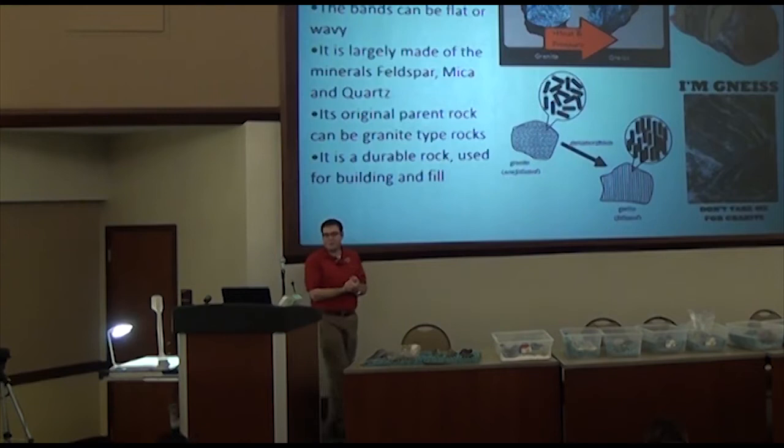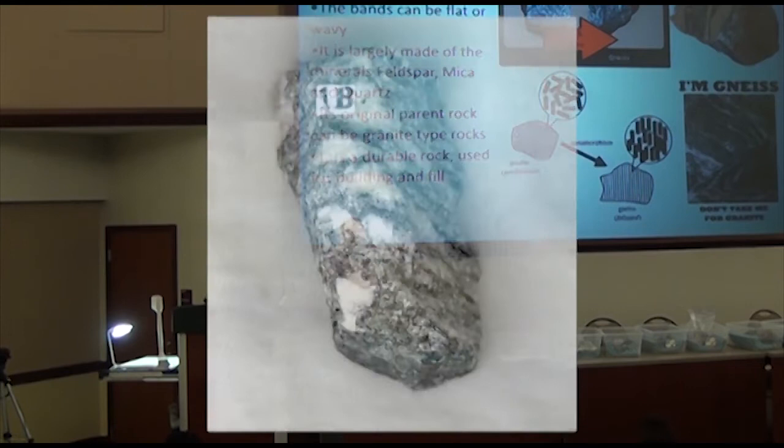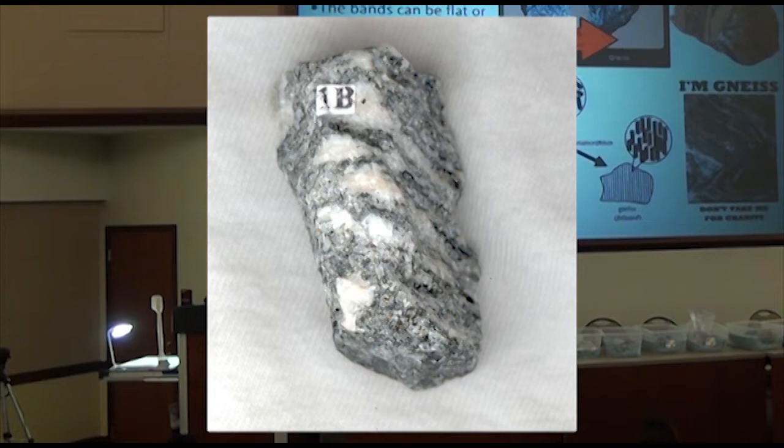I'm going to get started on the very first metamorphic rock we have to talk about. It's gneiss, so it should be labeled 1B. Can somebody tell me what color or colors their sample is?